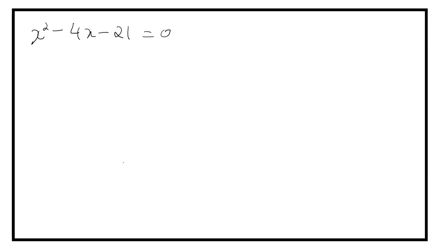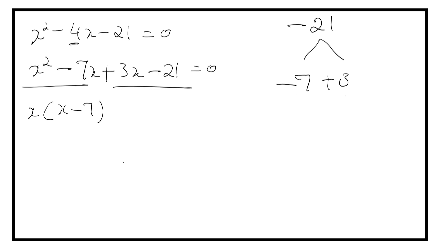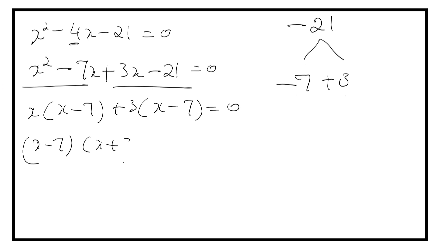Now let us factorize it. Factors of 21 are 7 into 3. We can get minus 4 by applying negative sign to 7 and positive to 3. If we multiply we get minus 21, and if we add we get minus 4. So we write X square minus 7X plus 3X minus 21 equals 0. Grouping: X is common giving X minus 7, plus 3 giving X minus 7. So X plus 18 into X minus 7 equals 0.